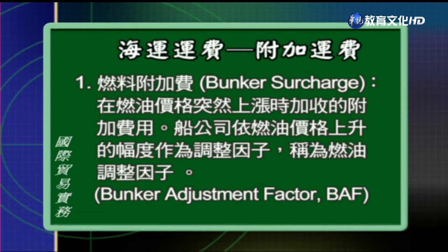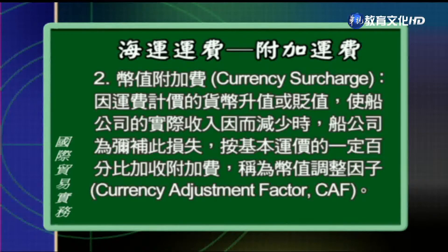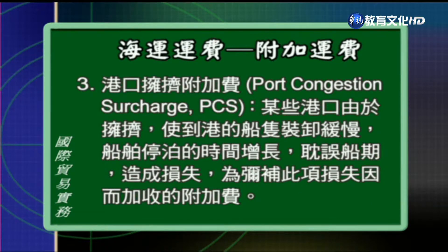为了保持基本费率的稳定，有些时候可能某些特殊因素导致船公司成本上升，但是他不会调整基本费率，而是以加收附加运费的方式来反映成本。常见的附加运费有这几项：第一种叫做燃料附加费（BAF），是燃油价格突然上涨时所加收的附加费用，船公司会以燃油价格上升的幅度来作为调整因子，叫做燃油调整因子。第二种是币值附加费（CAF），因为运费计价的货币升值或贬值，使得船公司的实际收入减少，船公司就依照基本运价的某一个百分比来加收附加费，这就是所谓的币值调整因子。